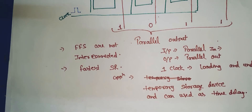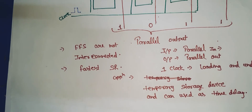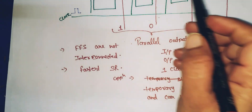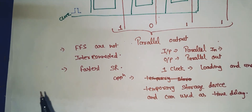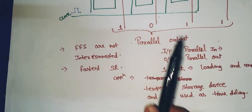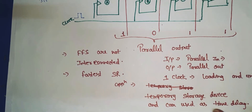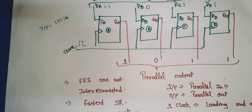This is the fastest shift register. If you loaded 1011 at the first clock pulse, then that same clock pulse will show you the output on the LEDs. So this is the parallel in parallel out shift register.